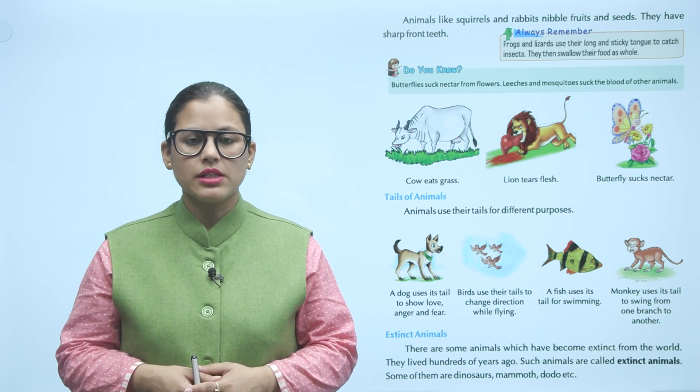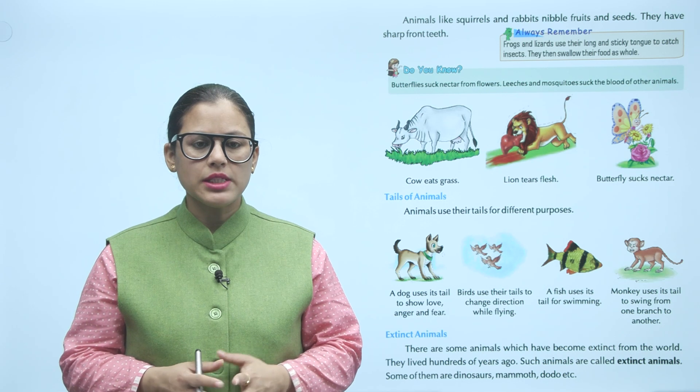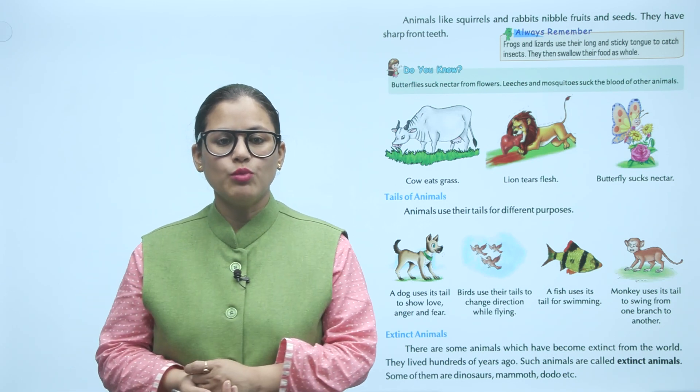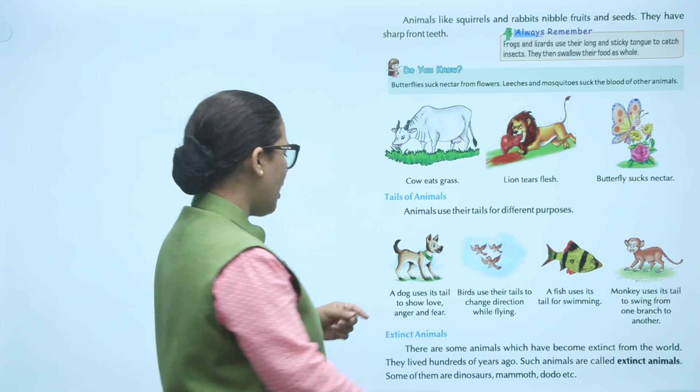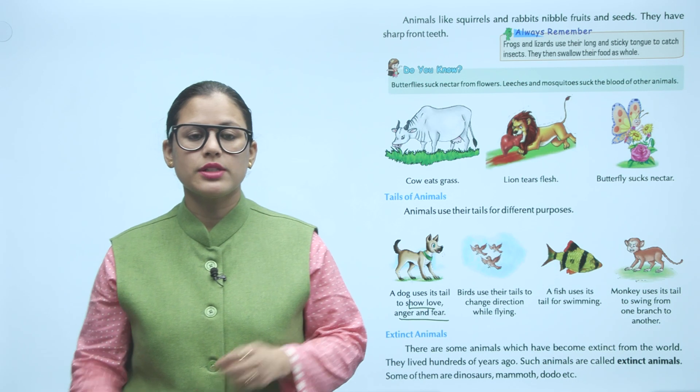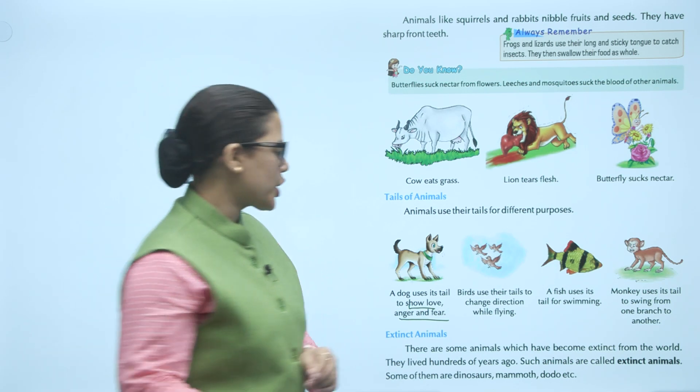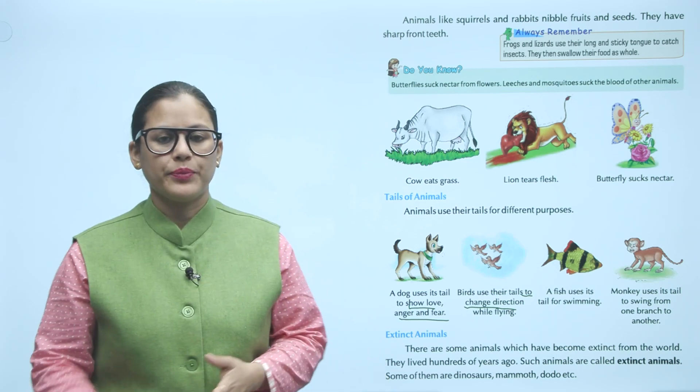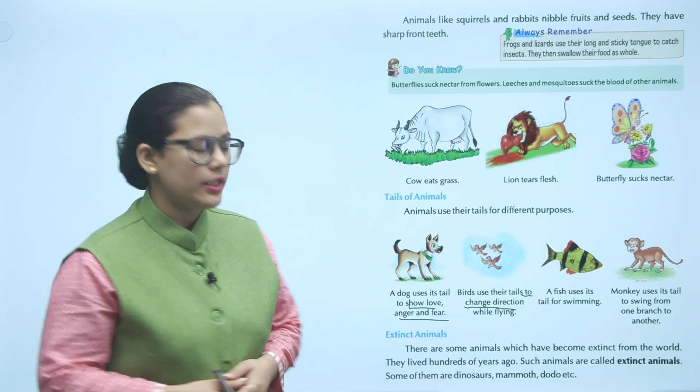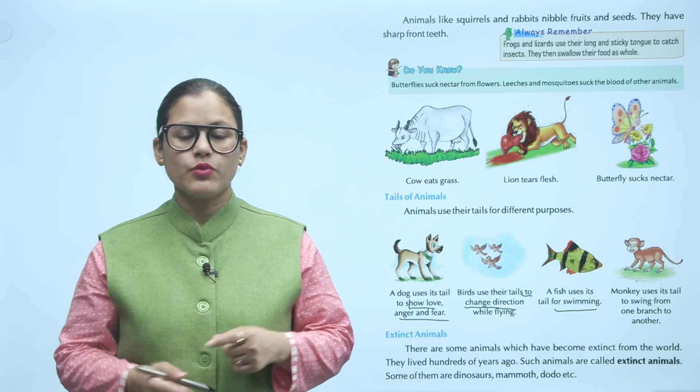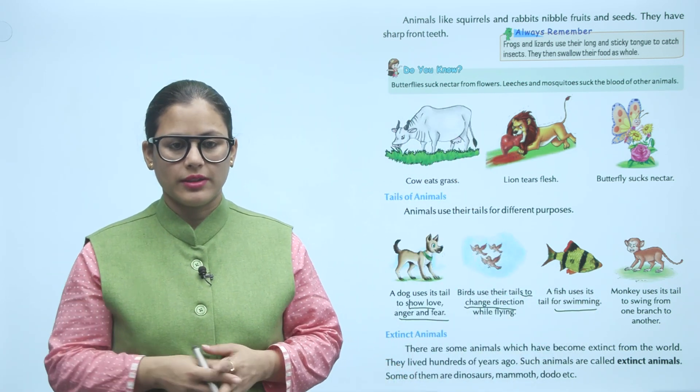Tails of animals. Animals use their tails for different purposes. Dogs move their tail to show love, anger and fear. Birds use their tails to change direction when they fly. Fish use their tail for swimming. And monkeys use their tail to swing from one branch to another.